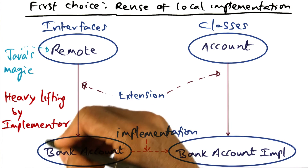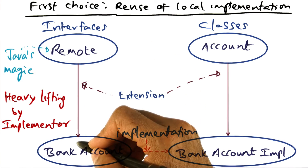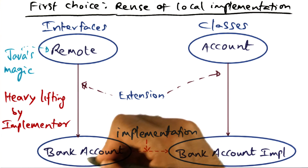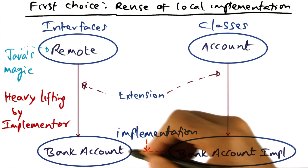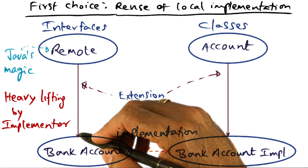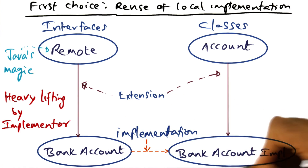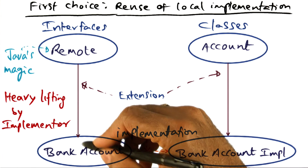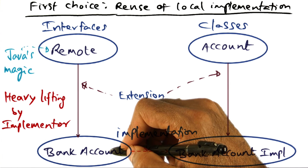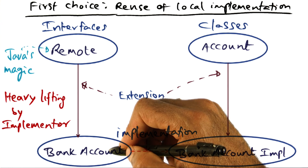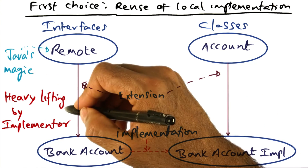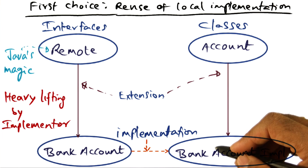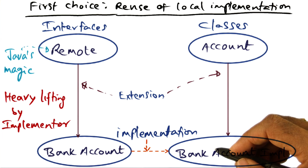Once we publish it, that interface is available because we derived it from the remote interface. The specific interface, the BankAccount interface, is available for any client on the network. However, when we instantiate the object, the location of the object — where that service is available — is not something that is readily visible to the client. So the heavy lifting has to be done by the implementer to make that instantiated object visible on the network.